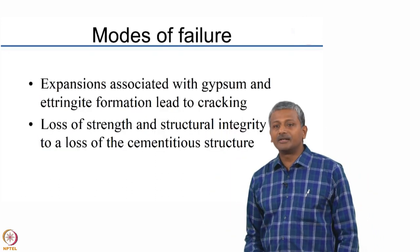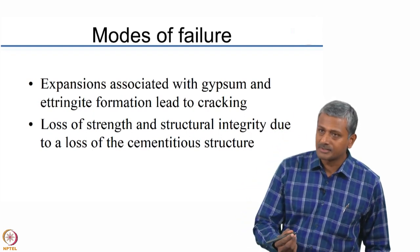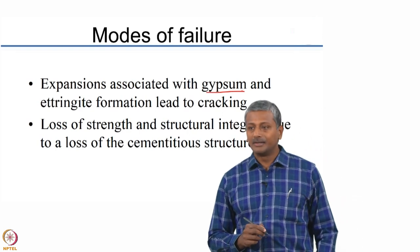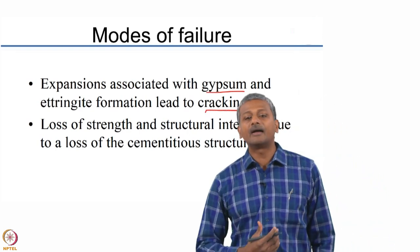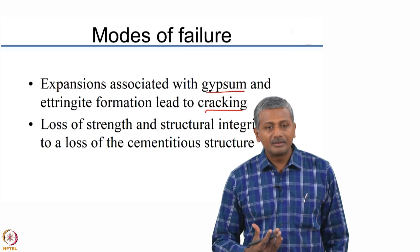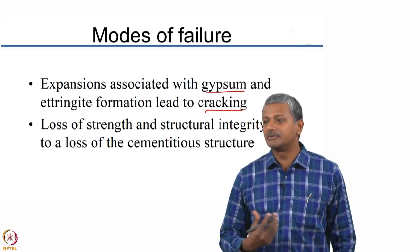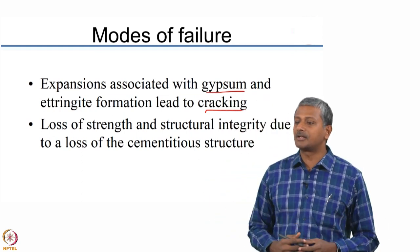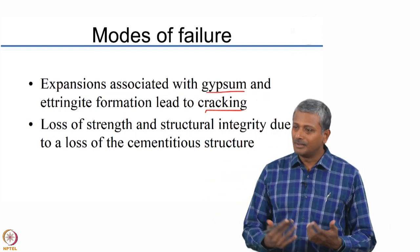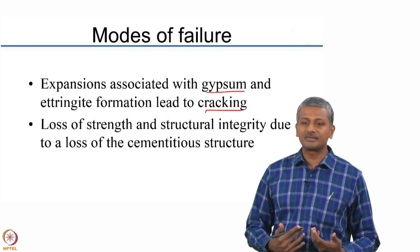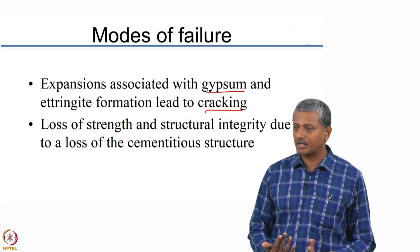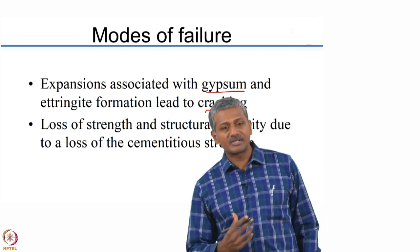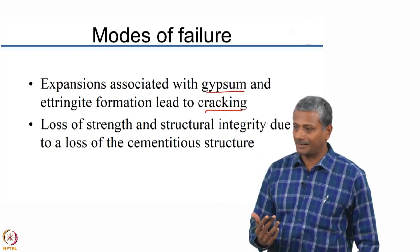So what are the modes of failure? Expansions — mostly because of ettringite formation rather than gypsum — lead to cracking. When expansion is happening inside a hardened concrete system, there is an obvious chance of extensive cracking because concrete cannot take the pressures related to the expansion. In a fresh state, concrete is still pliable, has a low modulus, and does not resist expansion or contraction much so it does not crack. But in hardened concrete, it has a high modulus and is rigid; any volume changes will obviously result in cracking.